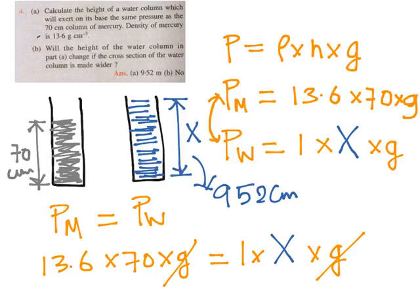The second part of the question: will the height of the water column in part A change if the cross section of the water column is made wider? The answer is no, it won't change. Why? Because the pressure exerted on the base of the vessel doesn't depend upon the volume; it only depends upon the height.